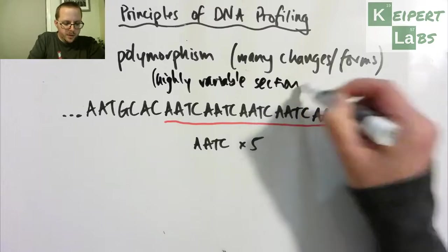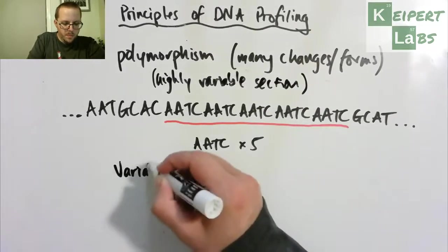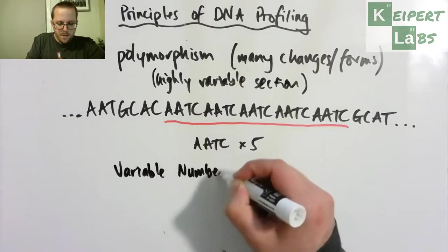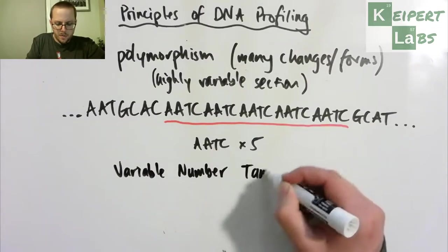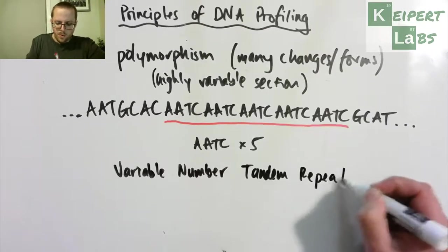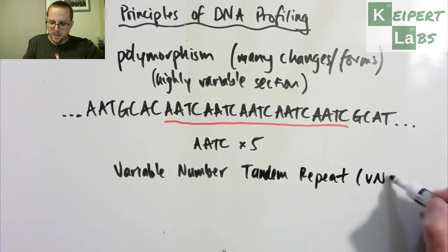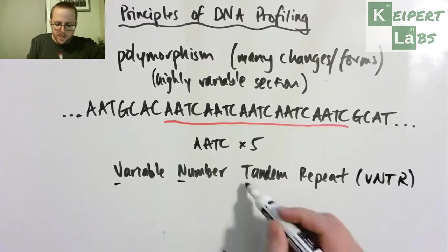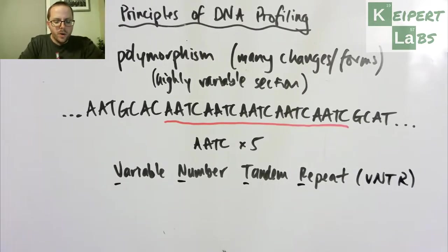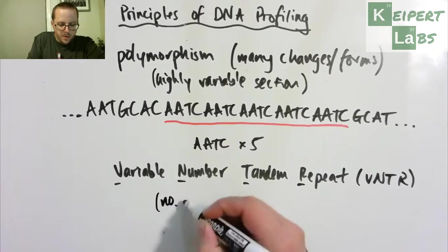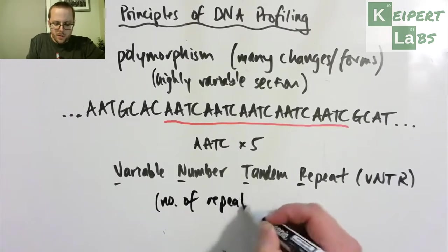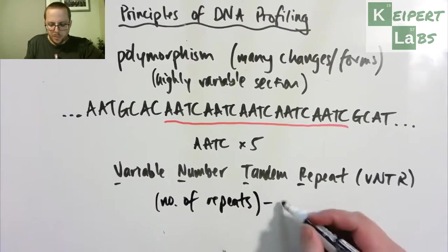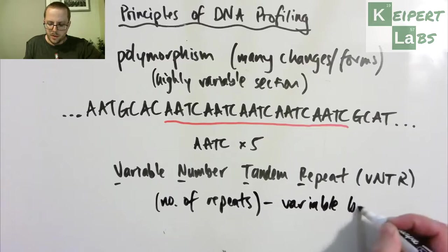And so what we call this, we give it a name of variable number tandem repeat or VNTR. So we're identifying that this is a point on our DNA strand where we will come across a particular section of the code that repeats. And so the number of times that it repeats is very variable between individuals.